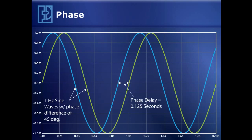Here's an example of two 1 Hz sinusoids that are phase shifted with respect to one another by 45 degrees of phase. We can easily convert between phase and phase delay by recognizing that there are 360 degrees of phase shift in one period of a sinusoid. In this case, the period for a 1 Hz sinusoid is one second. So 45 degrees equates to 0.125 seconds — 45 divided by 360 times one second — that's an eighth of a second, called the phase delay.